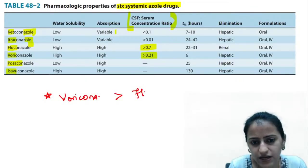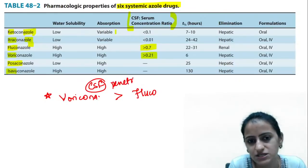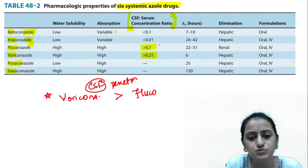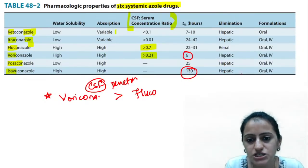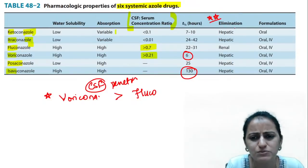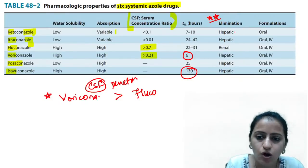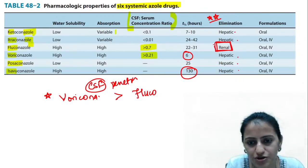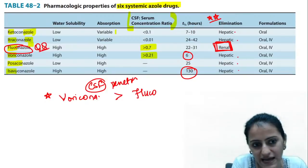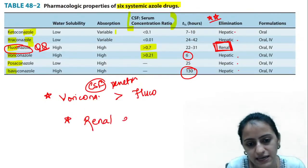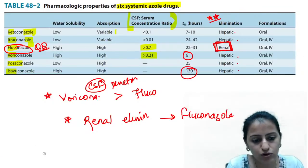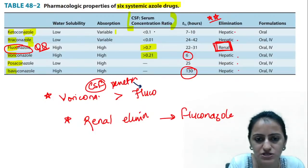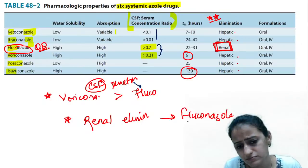Voriconazole has maximum CSF penetration, followed by fluconazole. Regarding half-life: isavuconazole has the maximum, voriconazole has the minimum. For elimination — very important: all azoles have hepatic elimination except fluconazole, which has renal elimination. Remember: fluconazole flows out via urine. Only one azole drug has renal elimination — fluconazole.